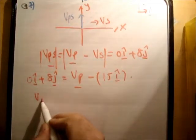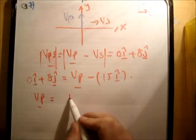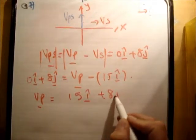Therefore, the passenger is equal to 15 i hat plus 8 j hat.